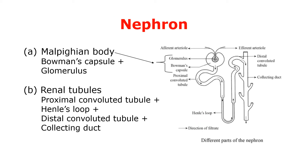Now let us understand the structure of nephrons. Nephrons are the structural and functional units of the kidney. There are about 1 million nephrons present in each kidney. Each nephron is made up of mainly two parts: the first is the Malpighian body and the second is the renal tubules. The Malpighian body is made up of an upper extended end of the renal tubule called Bowman's capsule and a bunch of capillaries called the glomerulus, which are packed inside Bowman's capsule.